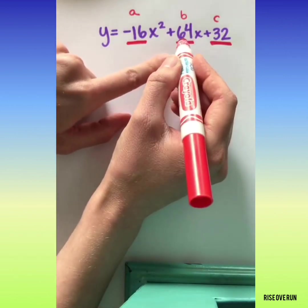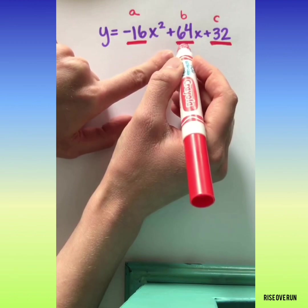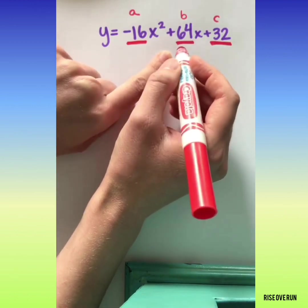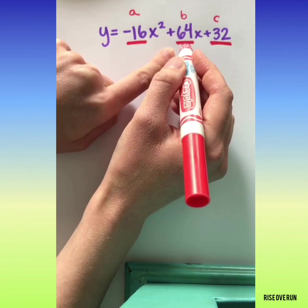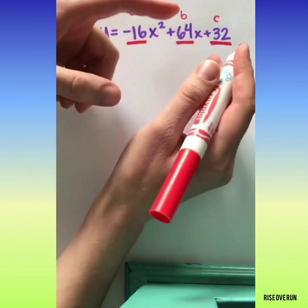This number here, b, is representing the initial velocity. Again, you probably don't need to know that too much in Algebra 1, but that's how hard something is thrown.